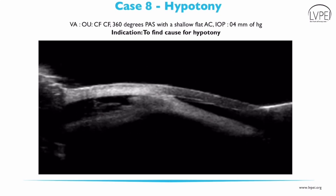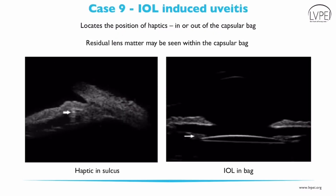UBM can also help find the cause for hypotony, such as in this case where UBM confirmed the diagnosis of 360-degree ciliocoroidal detachment as indicated by the white arrow. In patients with IOL-induced uveitis, UBM can help in locating the position of the IOL by locating the position of the haptic. Haptics not in the bag are imaged peripherally in the region of the ciliary sulcus. In-the-bag haptics are seen medial to ciliary processes in close relation to irregularly reflective membranes formed by the zonules and capsule.